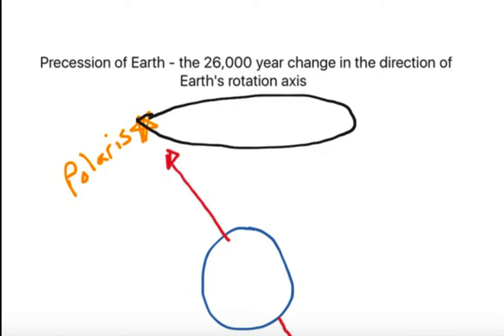Currently, we are pointing towards Polaris. The direction we will swing is in the clockwise direction. So in about 8,000 years, we're going to be pointing to a blue star called Deneb.